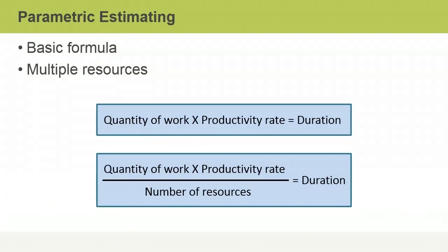Parametric estimating uses a mathematical formula that takes into account various factors that affect duration. Consider the basic formula for parametric estimating. When a single human resource is carrying out the activity, you multiply the quantity of work by the productivity rate. If you have multiple resources assigned to an activity, you multiply the quantity of work by the productivity rate and then divide the result by the number of resources.